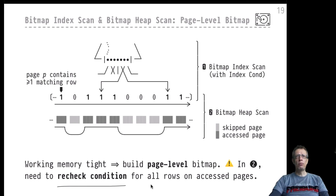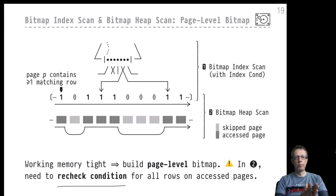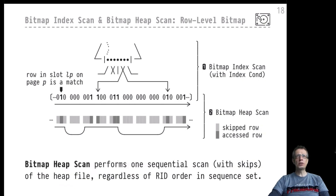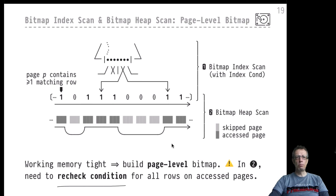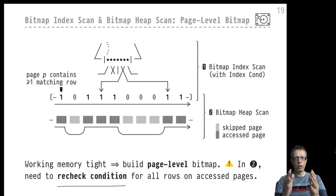Looking at the reality of PostgreSQL's implementation, it builds a hybrid bitmap. If working memory is ample, it performs the row-level bitmap of fine granularity. If working memory becomes tight, PostgreSQL switches to a hybrid version where some locations of the bit string encode individual rows and some portions encode only the page level. This hybrid mix is configured so that the available working memory is sufficient to hold the bitmap. Let's switch to the terminal to see this in action.